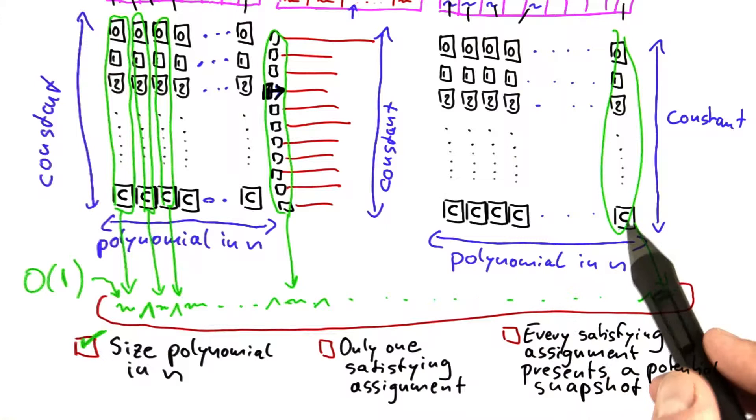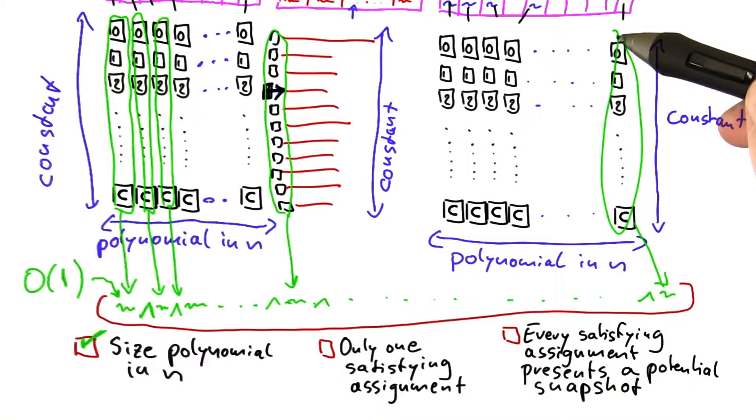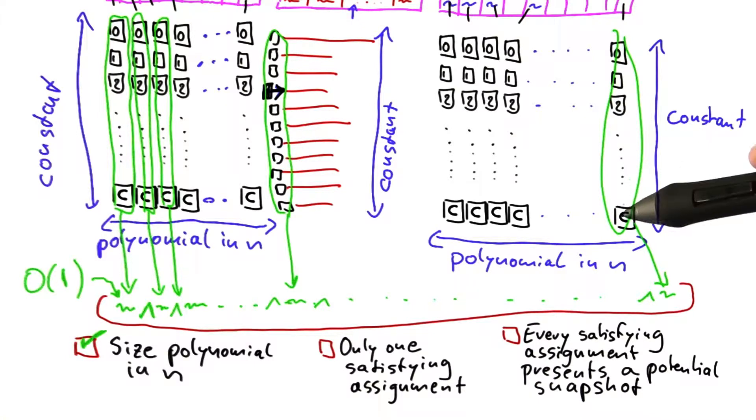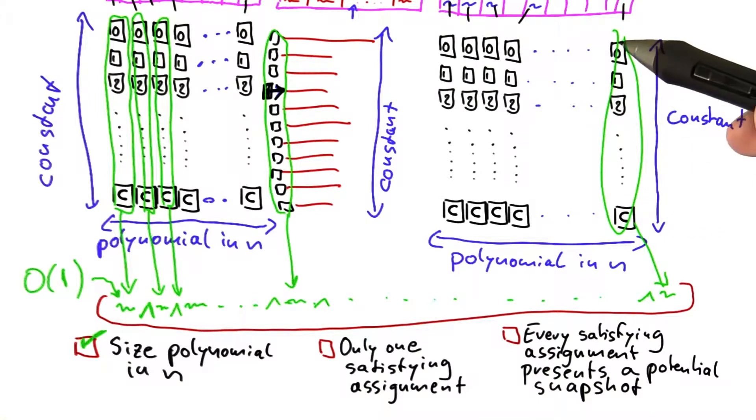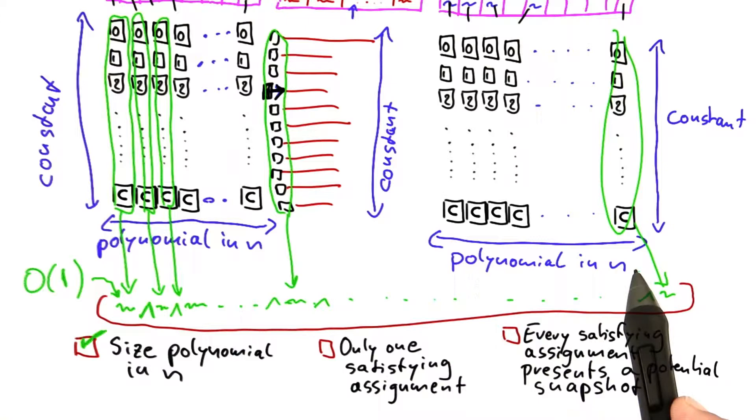We're also fine on this side here because the formulas again are of constant size. It can of course be a huge size, especially if you have a system that can carry very large variables. But nevertheless, it's a constant size. And that's all we care about. It does not depend on the size of the input. And we have a polynomial number of them again here.